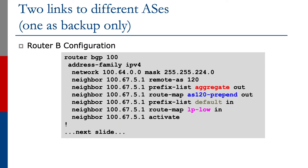If we look at Router B, we have the prefix list 'aggregate out' allowing the aggregate outbound, and another prefix list 'default in' allowing the default route inbound. But in addition, we have two route maps. We have one route map 'AS120 prepend', which will do the AS path prepend outbound, and another route map 'LP low', which will set the low local preference inbound.